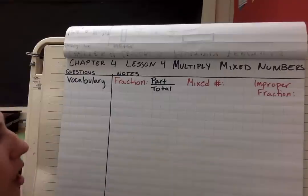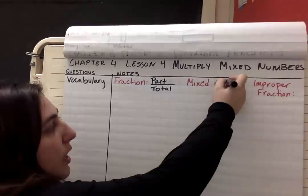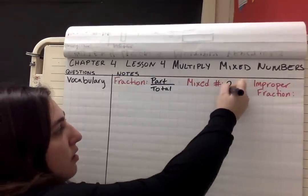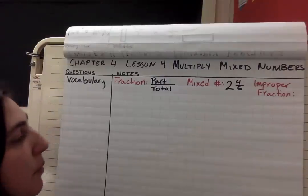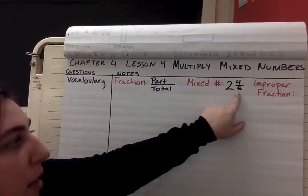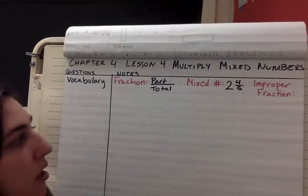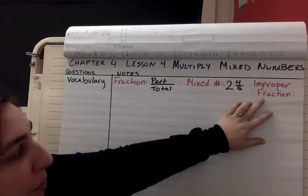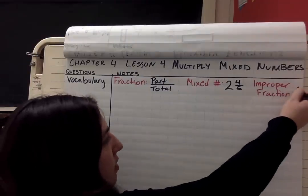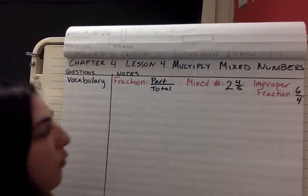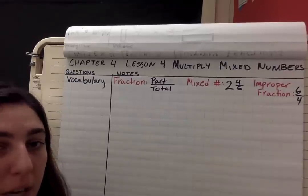Mixed number is going to look something like this: 2 and 4 fifths. So a mixed number has a whole number and it also has a fraction — that's why it's mixed. And then an improper fraction is going to look something like this: 6 fourths, where the numerator is larger than the denominator.